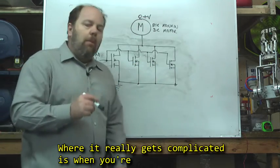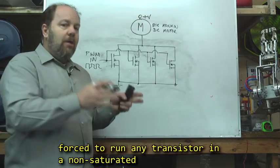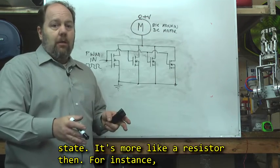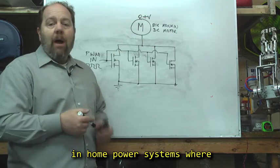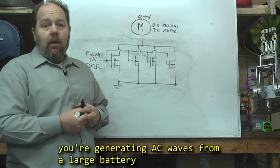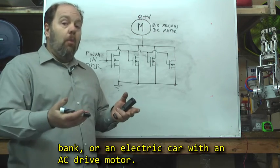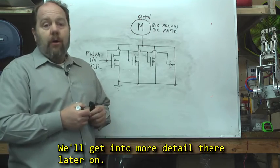Where it really gets complicated is when you're forced to run any transistor in a non-saturated state. It's more like a resistor. For example, in home power systems where you're generating AC waves from a large battery bank, or an electric car with an AC drive motor. We'll get into more detail there later on.